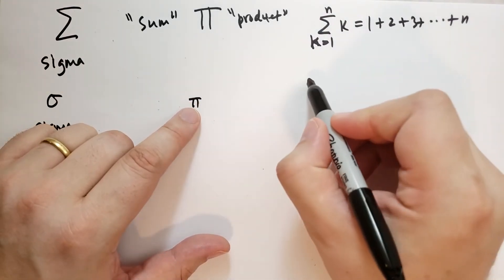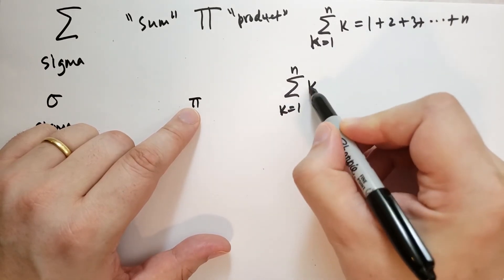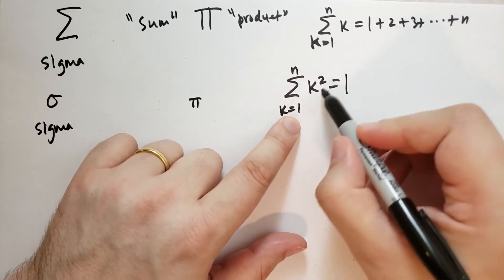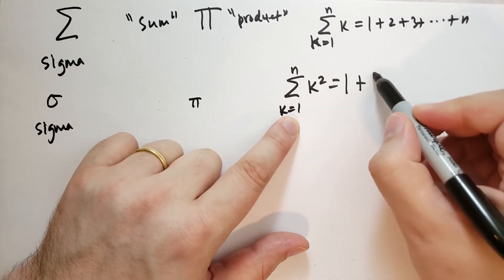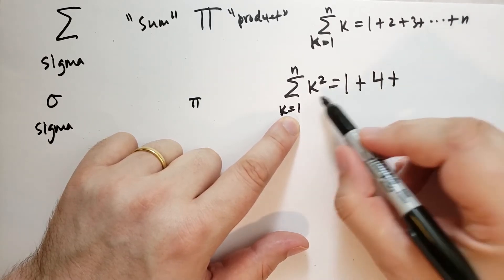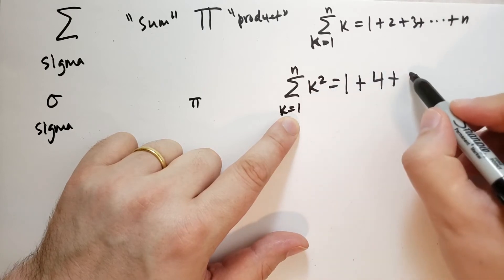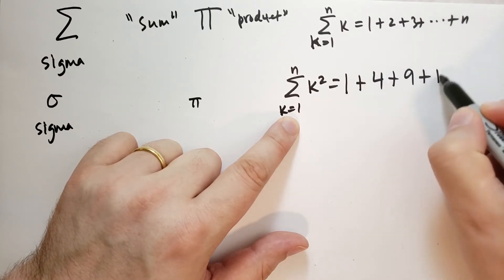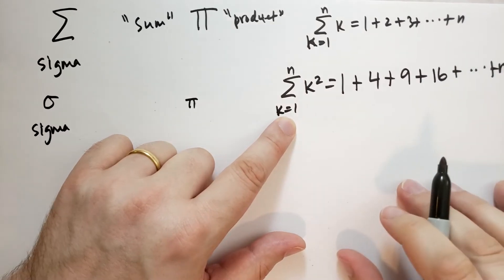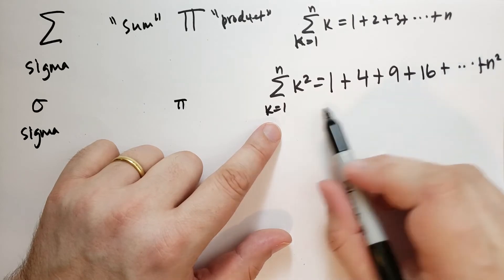What if we wrote the sum from k=1 to n of k²? The first term is 1² = 1, the next is 2² = 4, then 3² = 9, then 4² = 16, and we go up to n². The n² also gives you a clue into how you're adding those numbers together.